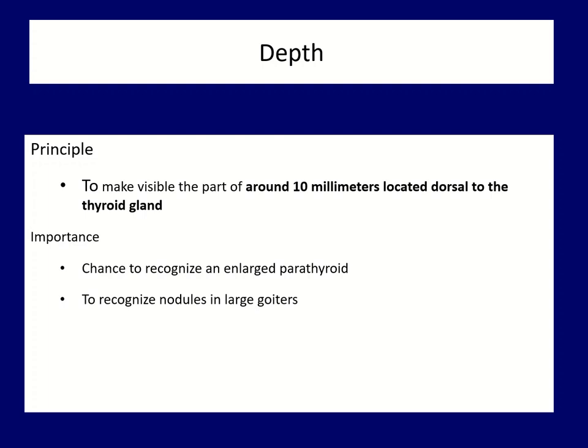The purpose of adjusting the depth is to make visible the part of around 10 mm located dorsal to the thyroid gland. This is the only way we will have a chance to find an enlarged parathyroid gland and not to overlook nodules in large goiters.